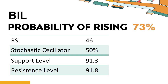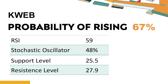The BIL short-term support level is 91.5. If it falls below 91.5 during the session, it will have a chance to test 91.3. The BIL short-term resistance level is 91.6. If it breaks through 91.6 during the session, it will look up to 91.8.